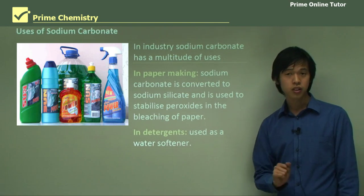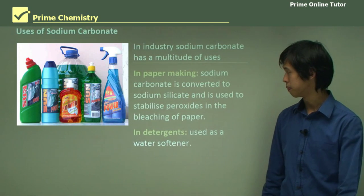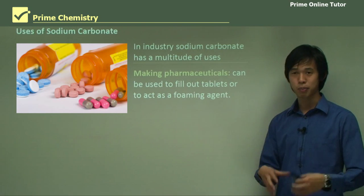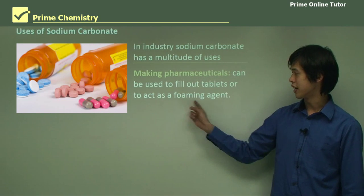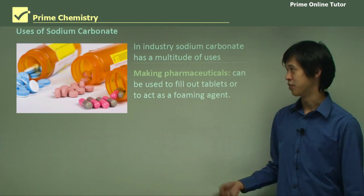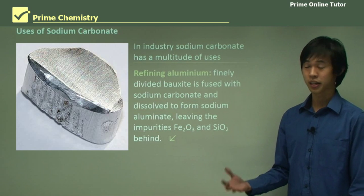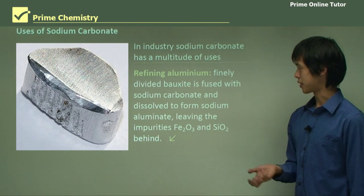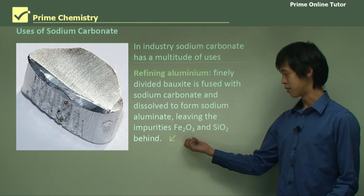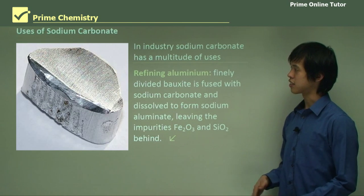On the topic of detergents, sodium carbonate was also used for a period as a soap, similar to sodium hydroxide. It's also used in pharmaceuticals — not for any other reason than to fill out tablet size, or to act as a foaming agent. Those aspirin-type tablets that dissolve or fizz usually have sodium carbonate as the fizzing agent. It can also be used in the refining of aluminium: finely divided bauxite is fused with sodium carbonate and dissolved to form sodium aluminate, leaving behind Fe2O3 and silicon dioxide impurities, helping to lower energy costs of refining aluminium.